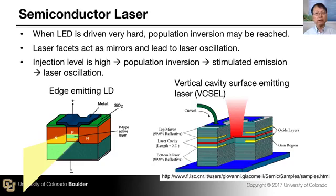When the current is very high, the injected electron and hole concentration can become so high that you reach the population inversion condition. As a result, you start having stimulated emission of photons, and these stimulated emitted photons find some reflecting surfaces and bounce back and forth within the semiconductor region — then you have a laser.